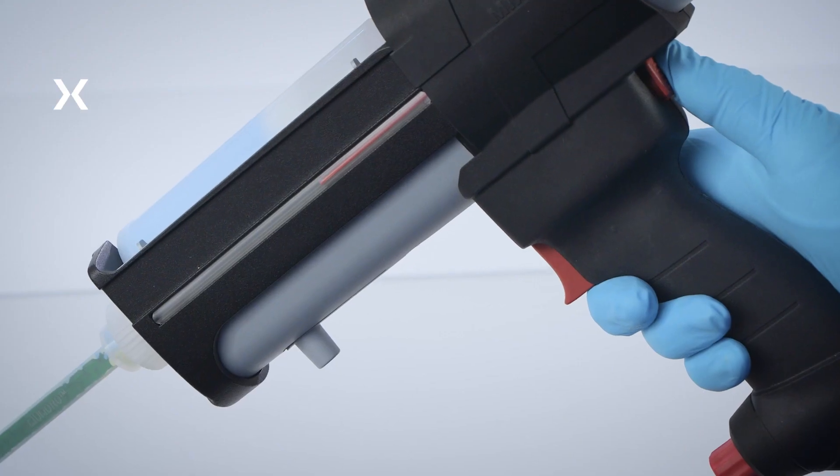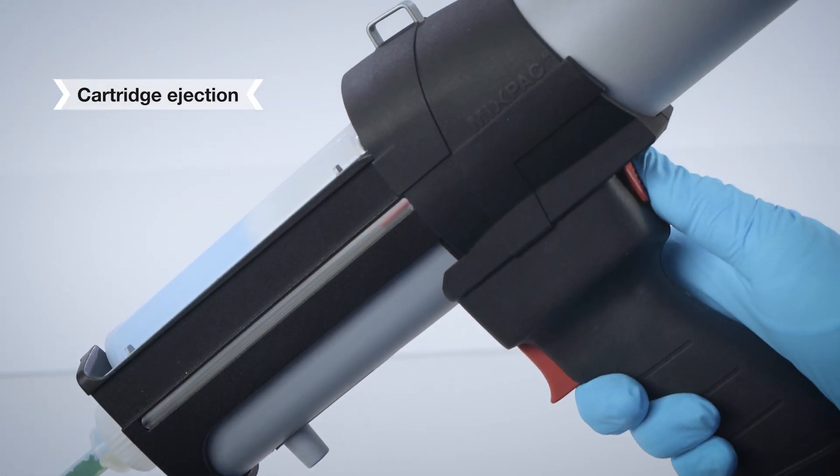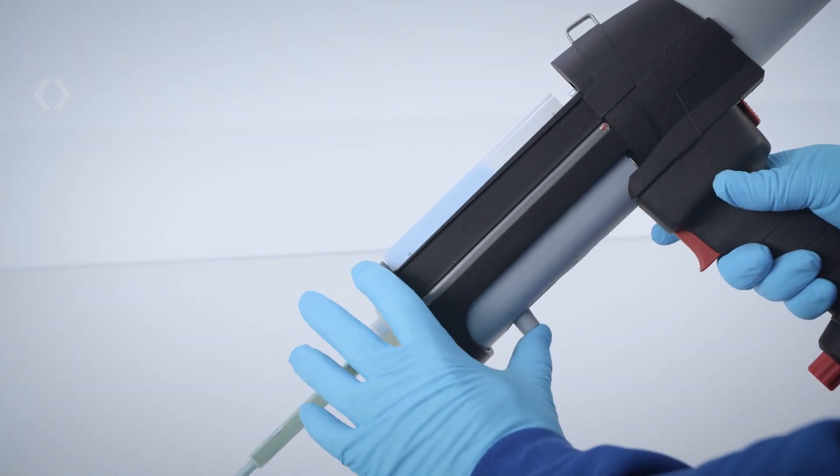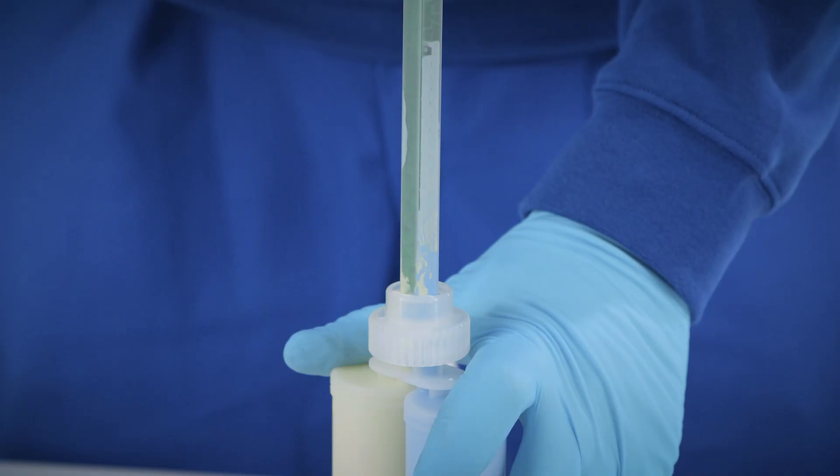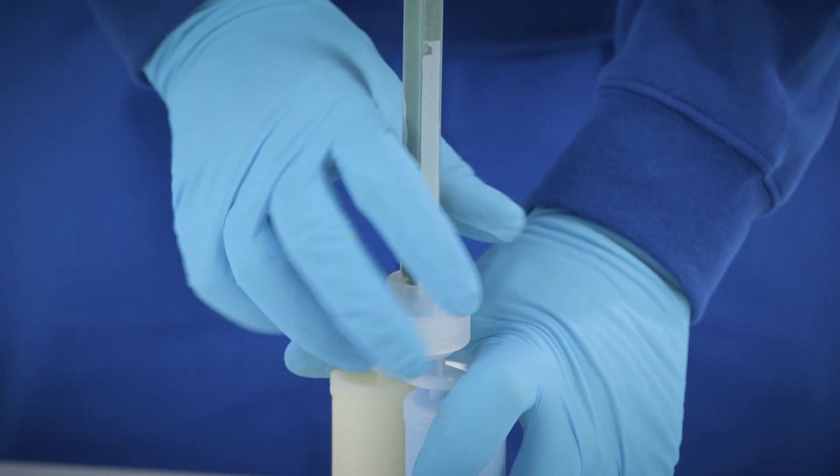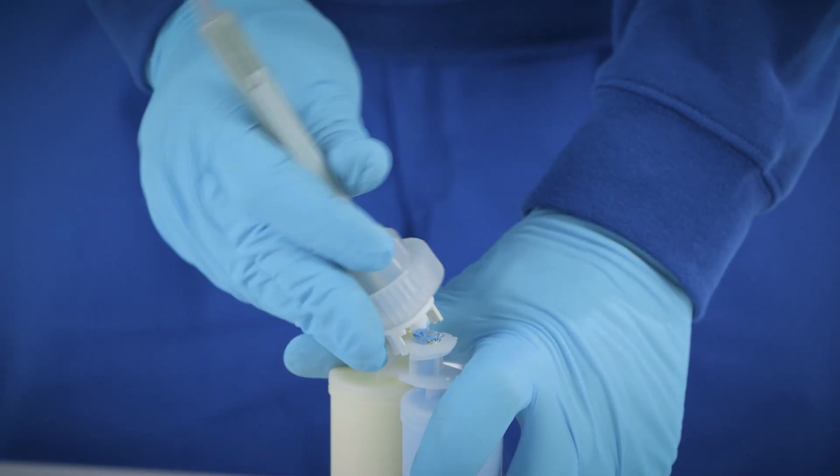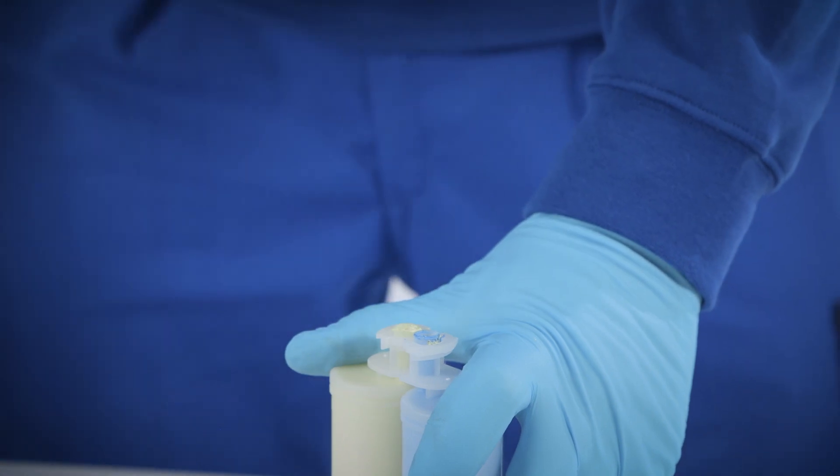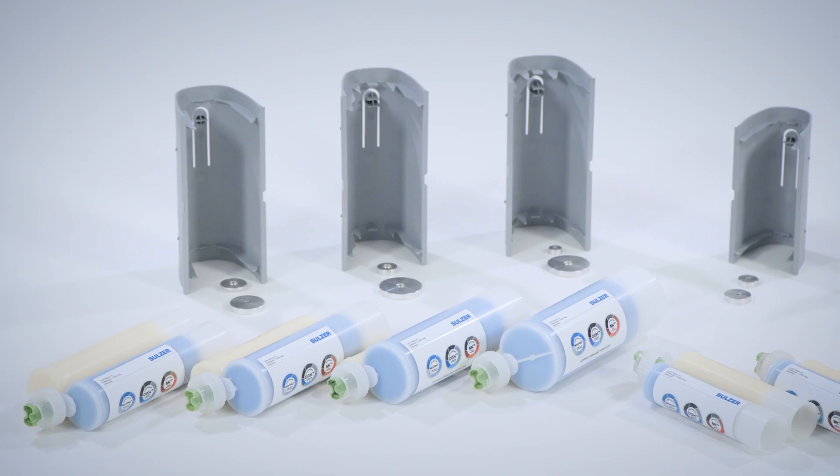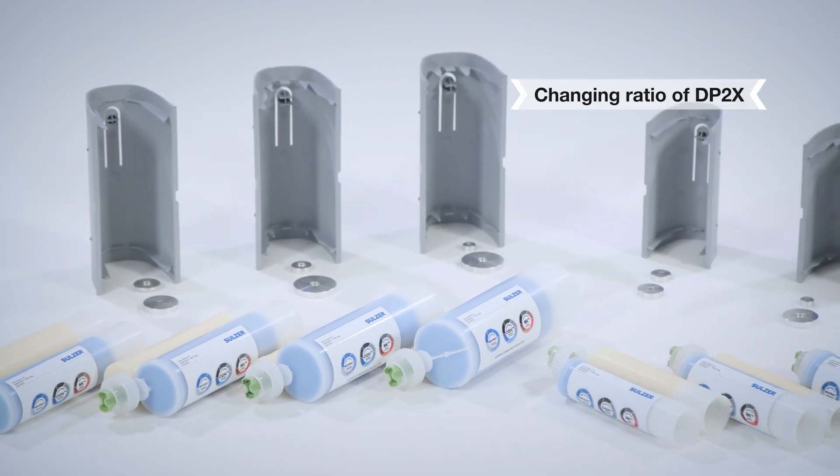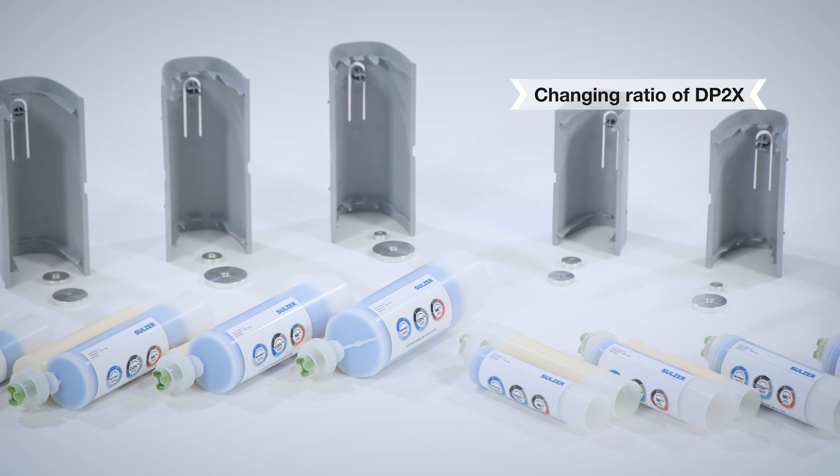When complete, press the plunger retract button until the indicator rod has moved all the way back. Press the cartridge eject button and remove the cartridge. If the cartridge is empty, dispose the cartridge and the mixer according to local regulations. Otherwise, dispose just the mixer and reinstall the plug and bayonet ring for future use.